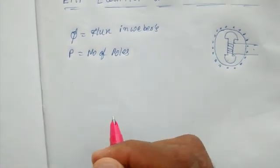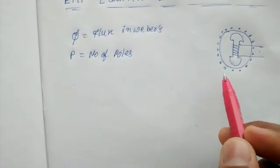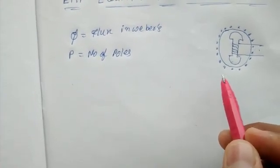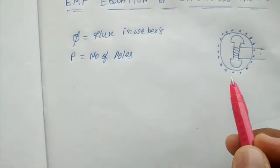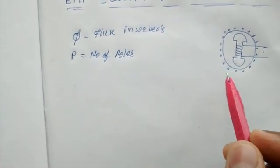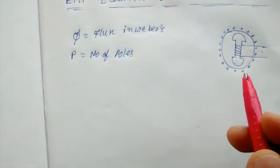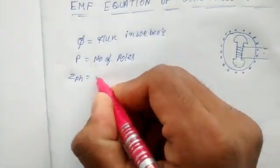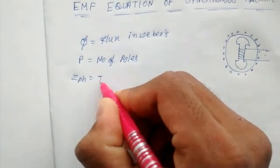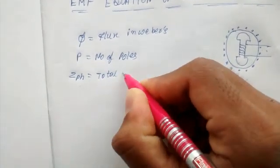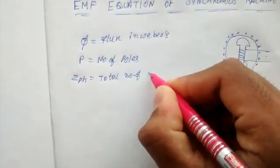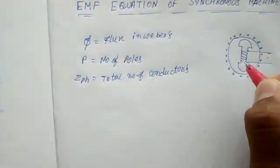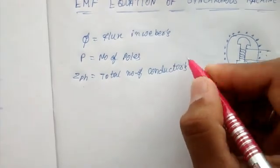So, we call it a three-phase synchronous machine. We call it an alternator, nothing but generator. So, we call it a winding per phase, ZPH. ZPH is the total number of conductors per phase.